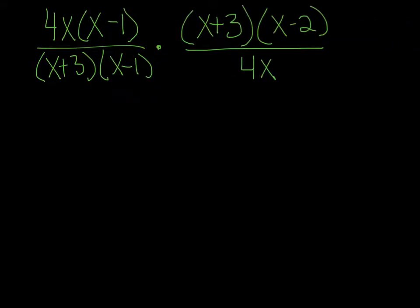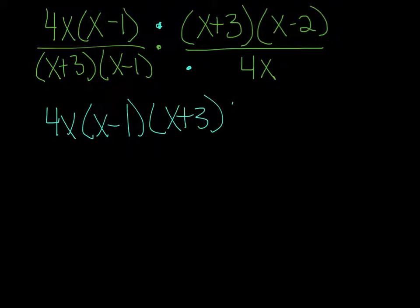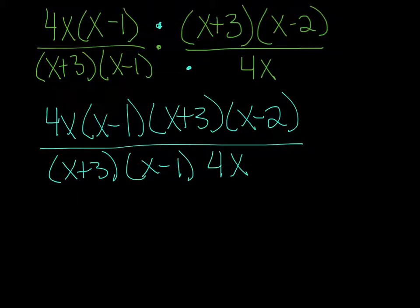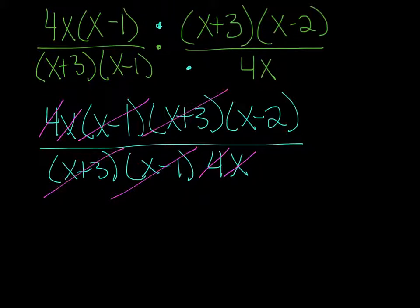Here's one: 4x times x minus 1 all over x plus 3 times x minus 1, times x plus 3 times x minus 2 all over 4x. This one's already factored, so we can skip that step. Because this is all multiplication, we do top times top and bottom times bottom. We end up with 4x, x minus 1, x plus 3, and x minus 2 in the numerator, and x plus 3, x minus 1, and 4x in the denominator. The 4's cancel, the x's cancel, the x minus 1's cancel, and the x plus 3's cancel. All that's left is x minus 2.